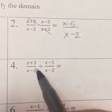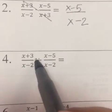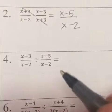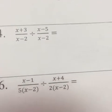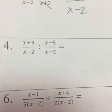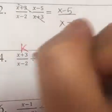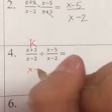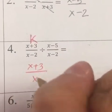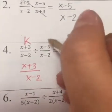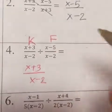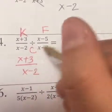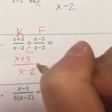Next we have a problem with division. In that case we use the KFC method — KFC stands for Keep, Flip, and Change. K means keep the first fraction exactly the same, then flip the second fraction (take the reciprocal), and then change the sign from division into multiplication.